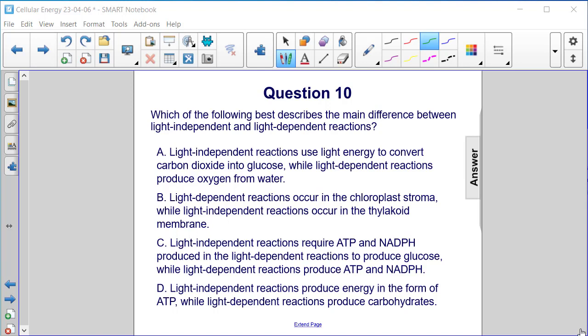A. Light-independent reactions use light energy to convert carbon dioxide into glucose, while light-dependent reactions produce oxygen from water.